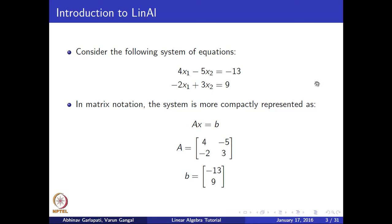Here we can see a system of linear equations: two equations and two variables, 4x1 - 5x2 = -13 and -2x1 + 3x2 = 9. We can see the advantages of matrix notation right away. The same system of two equations can be represented directly as one equation in the form Ax = p, where A is the set of coefficients and x is the 2 cross 1 matrix, or 2-dimensional vector x1, x2.